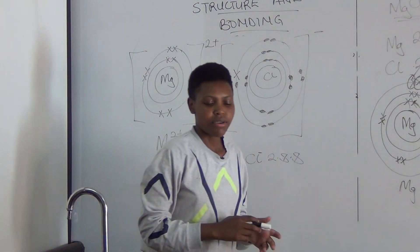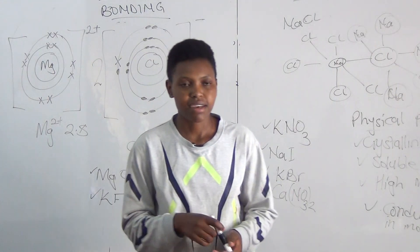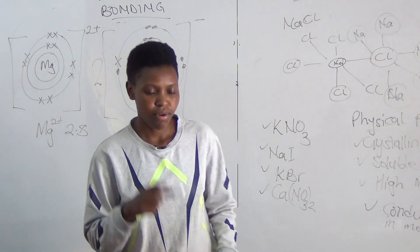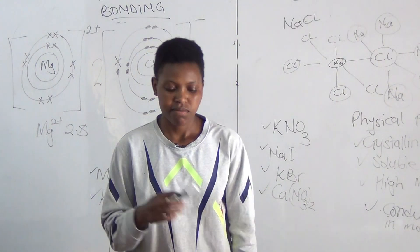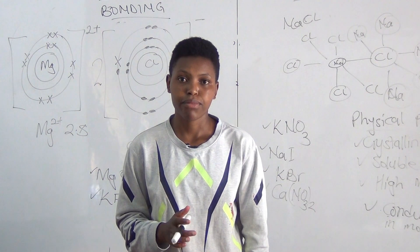That is ionic bonding. Next time, we shall look at covalent bonding as the next type of structure and bonding. Thank you.